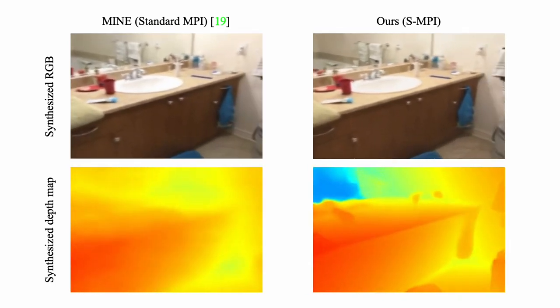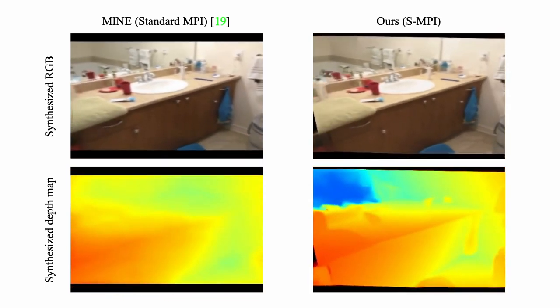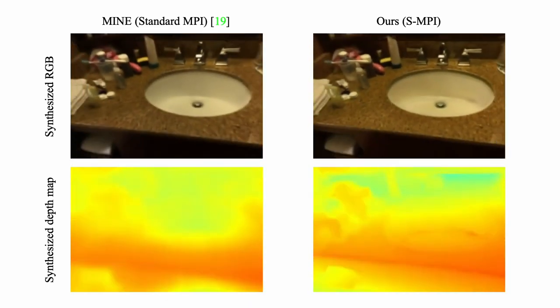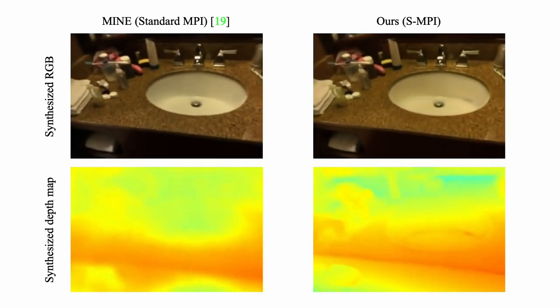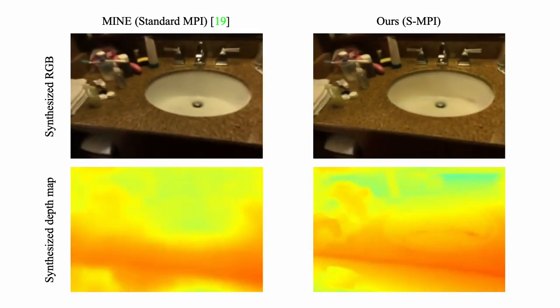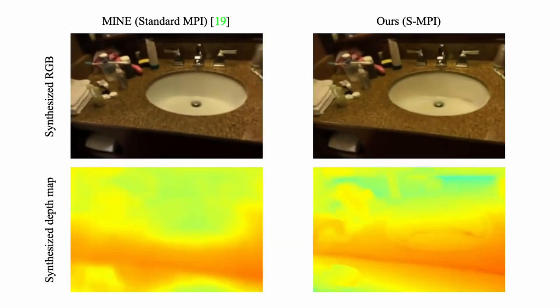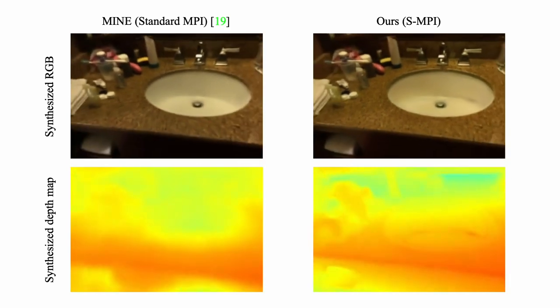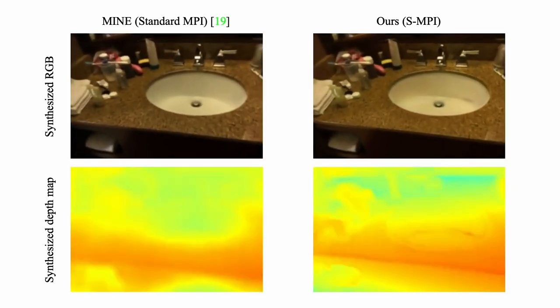In RGB predictions, our results are more accurate geometrically because of our better reconstruction. In this case, the standard MPI method shows blurry RGB predictions in extreme poses because it distributes repeated contents of one slanted plane onto multiple paralleled MPI layers. In contrast, our model produces plain layers with scene-adaptive poses, generating sharp results.